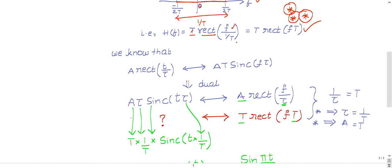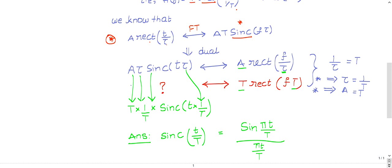To find the impulse response we need to take the inverse Fourier transform of this. You should know from Fourier transform theory that A · rect(T/τ) has a Fourier transform of A·τ · sinc(f·τ). Now if you take the dual of this — the dual property means you swap T with F and F with τ — then A·τ · sinc(T·τ) will have a Fourier transform of A · rect(F/τ).